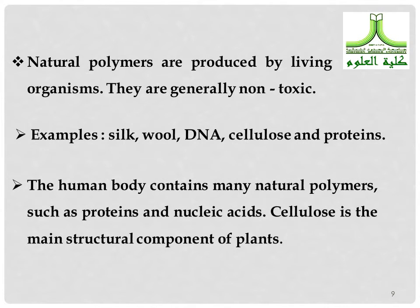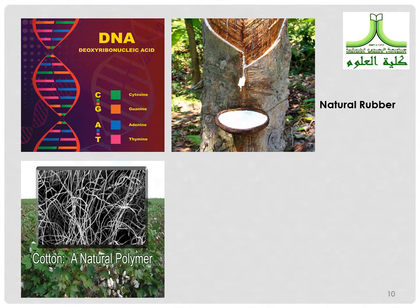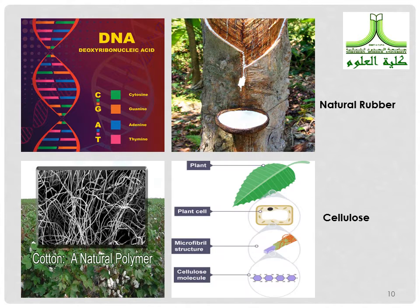The human body contains many natural polymers such as proteins and nucleic acids. Cellulose is the main structural component of plants. Other examples include DNA, natural rubber, and cotton.